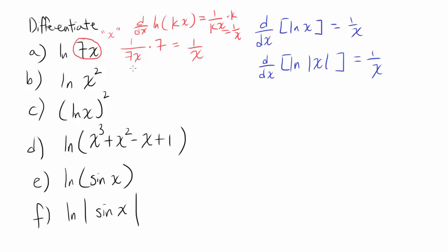There are two ways of doing it. First way, just do it directly: you get 1 over x squared times 2x, from which you get 2 over x. Another way, using the property of natural log, you can move the exponent 2 out front, giving 2 times natural log of x as the original function. Differentiating this, you get 2 over x. Either way, you get the same result.